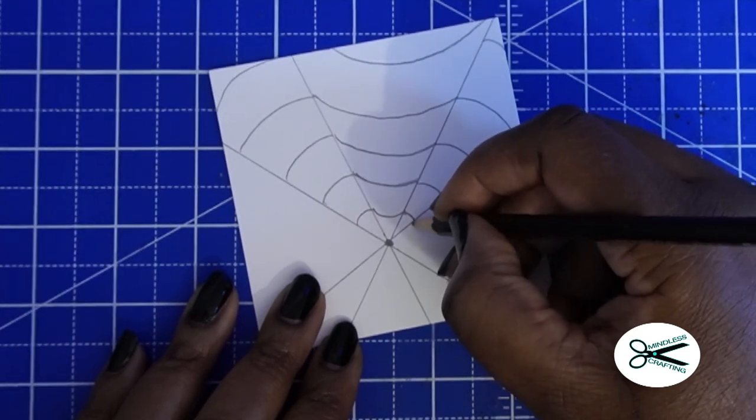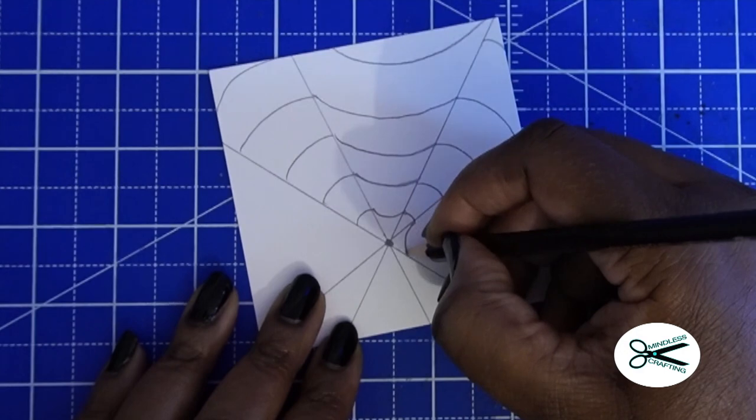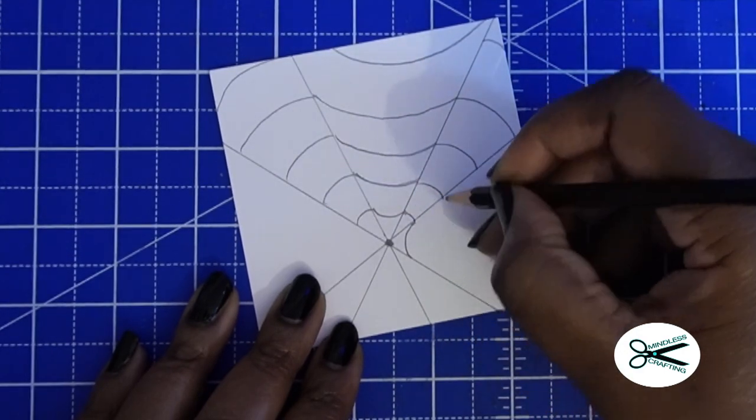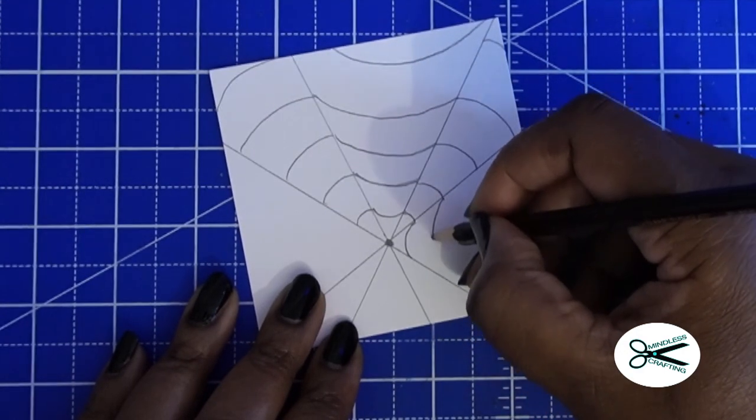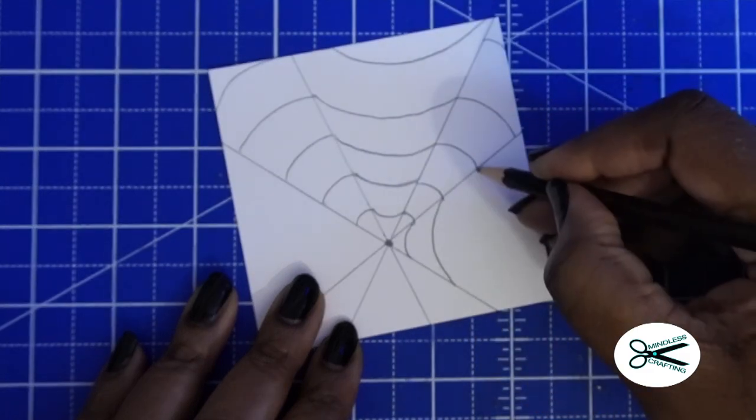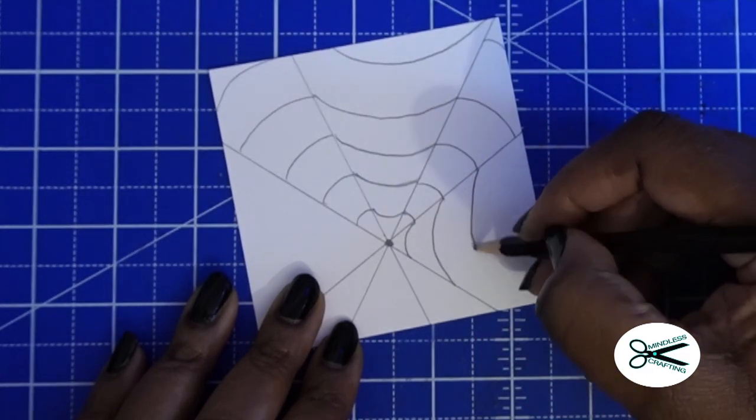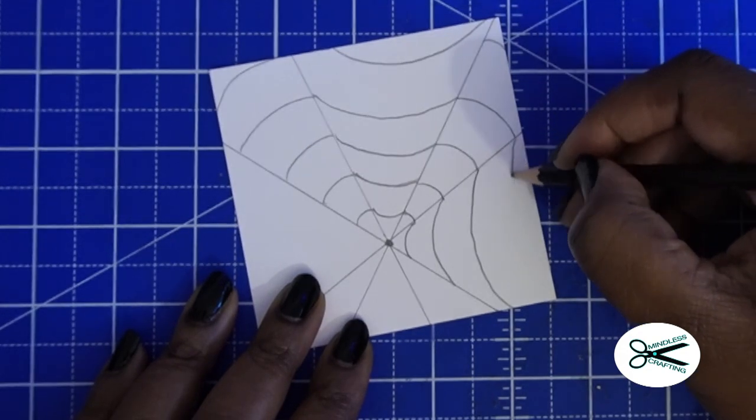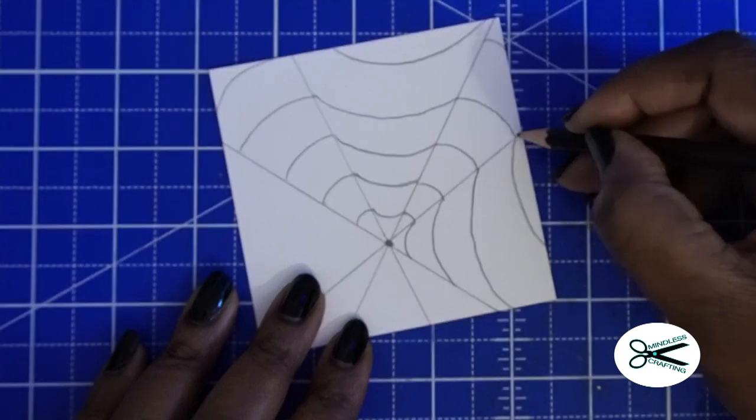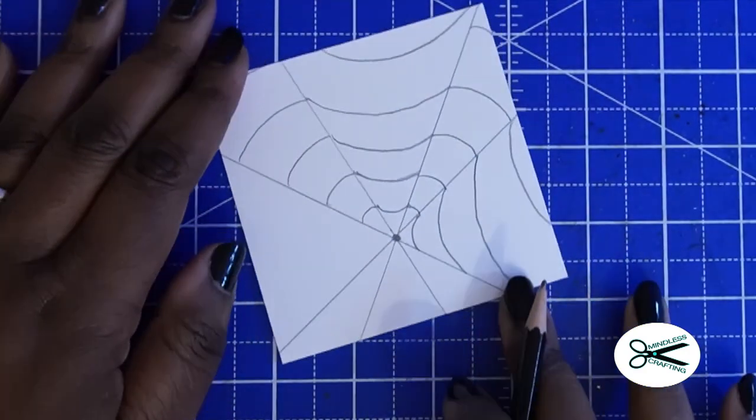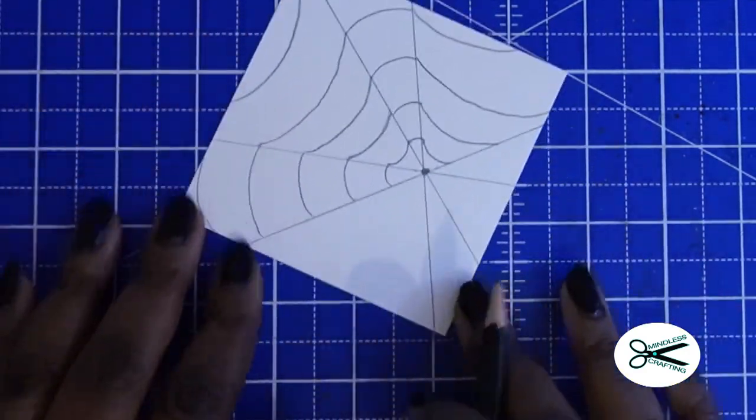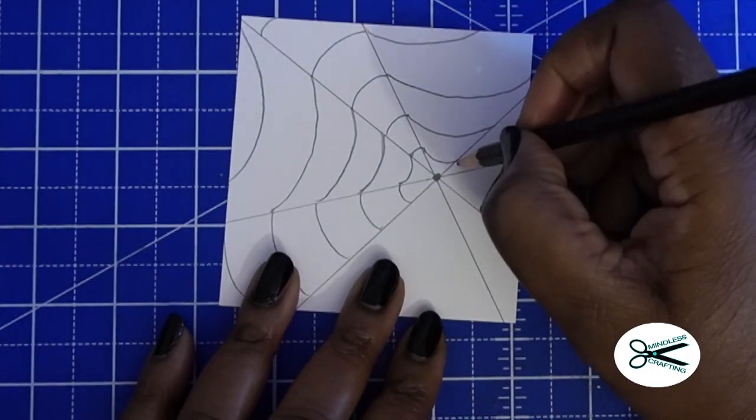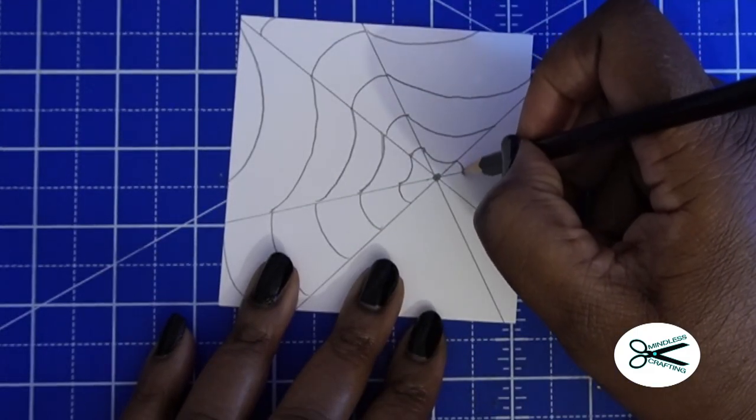But like I said, just have fun with it. Then we're going to go in the opposite direction again, this way. Just continuing from this line right here. And then let's just go like that. Okay, it doesn't look like much yet. But watch. The magic is going to happen this way.